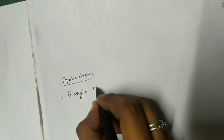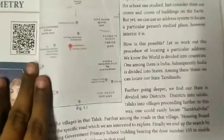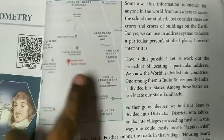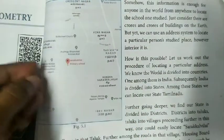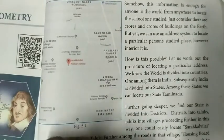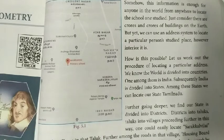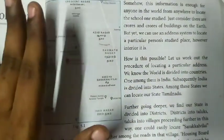Now we are going to see some applications of coordinate geometry in real life. We are using Google Maps from time to time — there, coordinate geometry is used. In Google Maps, all places are marked with points. Using coordinate geometry, we can find the distance between two points, and after some manipulation, you can find the travel time and everything. So for Google Maps, coordinate geometry is the main thing.